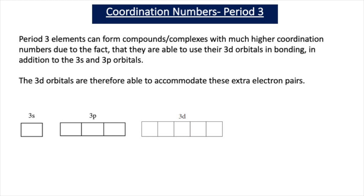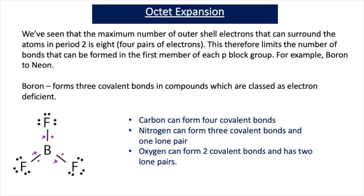For period 3 elements, they can form compounds and complexes with much higher coordination numbers than 4. This is due to the fact that they're able to use their 3d orbitals in bonding, in addition to the 3s and 3p orbitals. The 3d orbitals are therefore able to accommodate these extra electron pairs. In period 2, there are no 2d orbitals, and therefore only 4 electron pairs can surround the central atom. For period 3, there is 1 3s orbital, 3 3p orbitals, and 5 3d orbitals, which is why you can have much higher coordination numbers. This ability of period 3 elements to have higher coordination numbers is down to a concept called octet expansion.